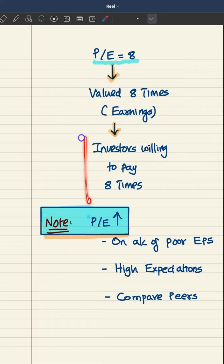It means investors are willing to pay 8 times what this share is actually earning. Why are investors ready to pay more? Because they believe this share has more potential. It can earn more.